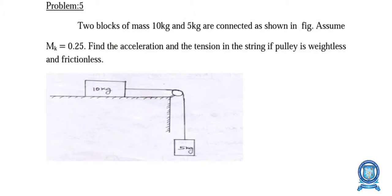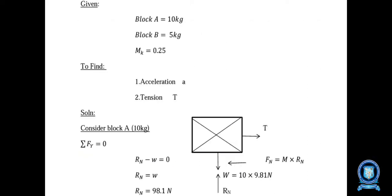Problem 2 is completely based on Newton's law of motion. Two blocks of mass 10 kg and 5 kg are connected as shown in the figure. Assume μk = 0.25. Find the acceleration and tension in the string if the pulley is weightless and frictionless. The 10 kg block (block A) is on the ground with friction, and the 5 kg block (block B) is hanging freely. Given: mass of A = 10 kg, mass of B = 5 kg, μk = 0.25. Find: acceleration A and tension T.